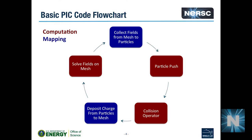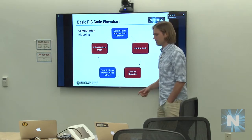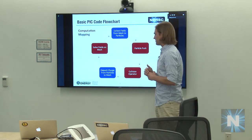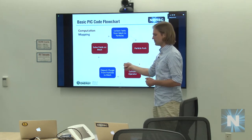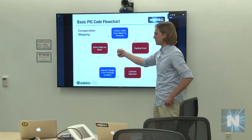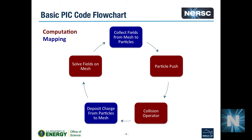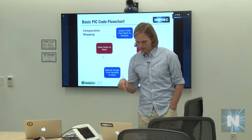A basic particle-in-cell code goes around a loop where it has a group of particles. You push the particles forward in time using an equation of motion. In collisional plasmas, you use a collision operator to take care of collective small-angle scatterings. Then you collect the charge from your particles to a mesh, solve Maxwell's equations on the mesh to get your fields, collect the fields back from the mesh to the particles, calculate forces on the particles, and push the particles again — going around and around in this loop.